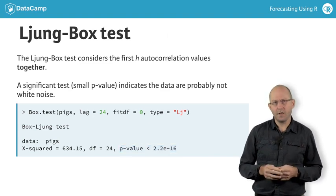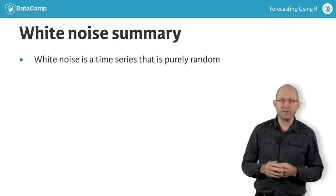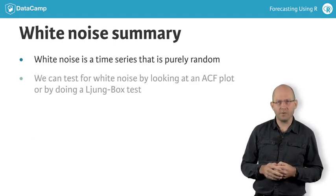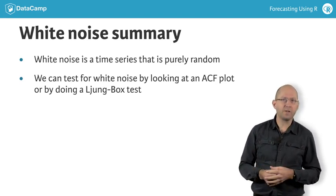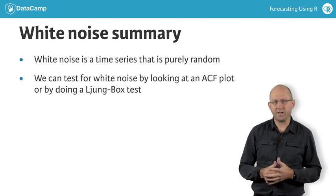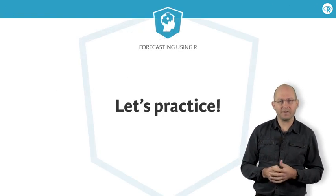To summarize, white noise is a purely random time series. Often, you will use a Ljung-Box test to see if you have a white noise series. If you don't have white noise, you can then look at the ACF to see which spikes are the most significant. Now it's your turn to try these ideas on another time series.